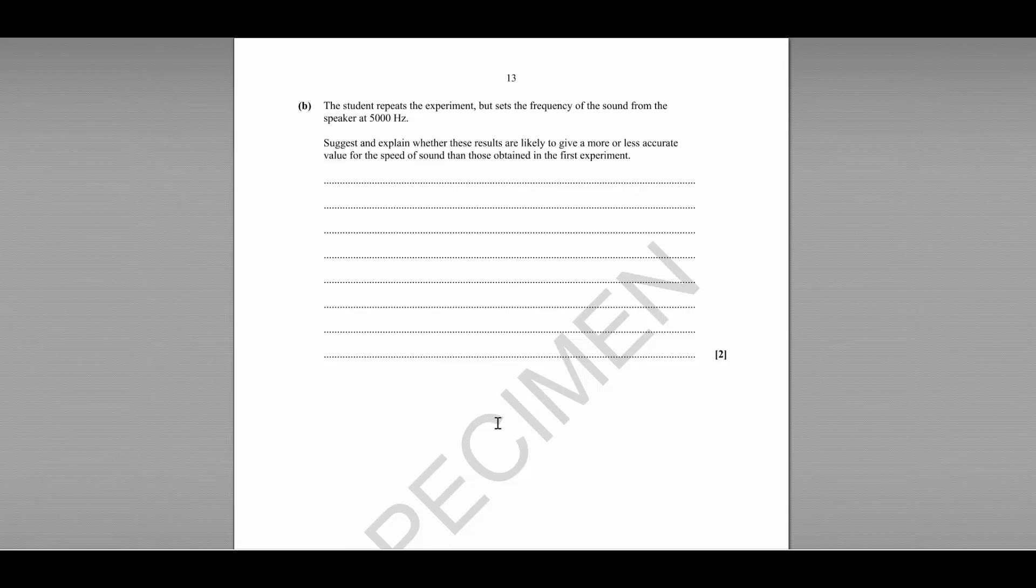Part B, the student repeats the experiment but sets the frequency of the sound to 5000 hertz. Suggest and explain whether these results are likely to give a more or less accurate value for the speed of sound than those obtained in the first experiment.